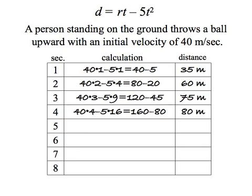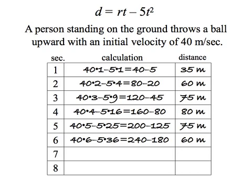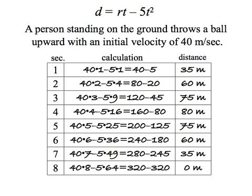And again, as the ball's going up it's slowing down. It covers 35 meters in the first second, 25 meters in the second second, 15 meters in the third second, and just 5 meters in the fourth second. Then we plug 5 in for the fifth second, and now we realize that it started back down because it's lower than it was after 4 seconds. After 6 seconds it's 60 meters off the ground, then 35 meters after 7 seconds, and it's back on the ground at 0 meters after 8 seconds.